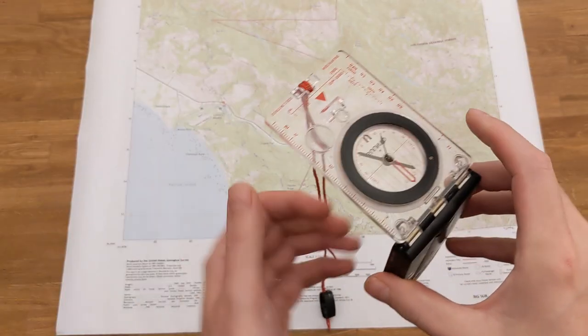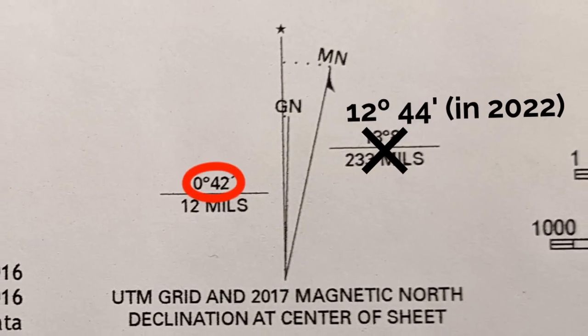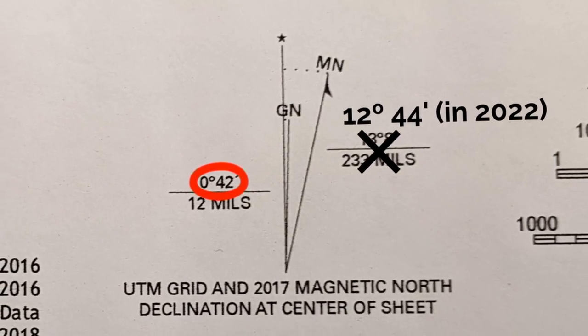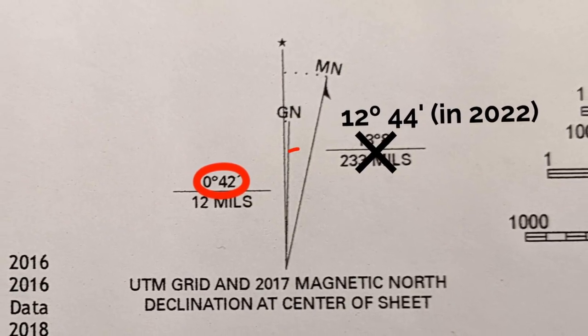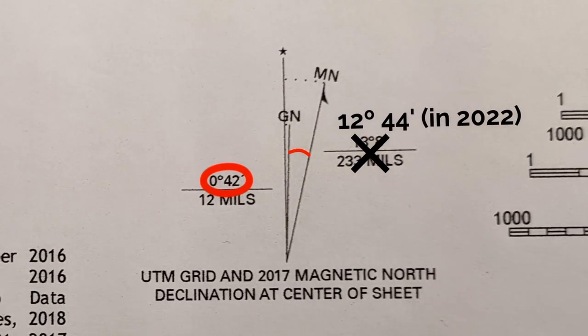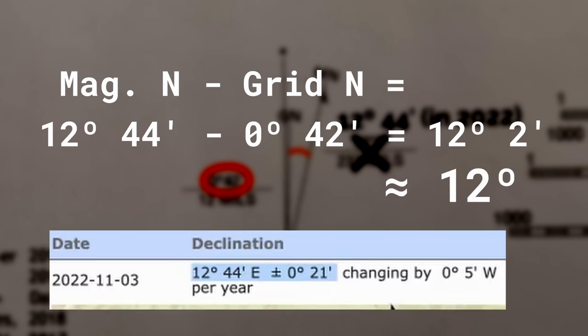Back to setting the declination on our compass. We found that the declination is 12 degrees and 44 minutes east, and our grid north is 42 minutes east. Since we want our compass to have zero degrees pointing to grid north, we want to use the angle between magnetic north and grid north for our declination setting. So in this case, we subtract the grid north angle from our declination, giving us 12 degrees and 2 minutes east. We'll just call it 12 degrees, since the margin of error on the magnetic north reading is plus or minus 21 minutes.